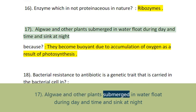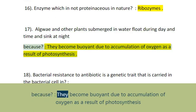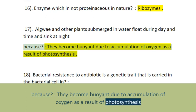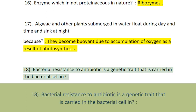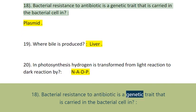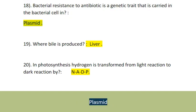Question 17: Algae and other plants submerged in water float during daytime and sink at night because they become buoyant due to accumulation of oxygen as a result of photosynthesis. Question 18: Bacterial resistance to antibiotics is a genetic trait carried in the bacterial cell in a Plasmid.